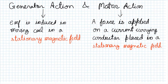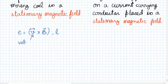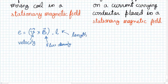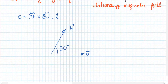We are talking about a magnetic field which is stationary and its effect on a moving conductor and a current carrying conductor. The EMF induced in a moving coil is given by V cross B dot L, where V is the velocity of the conductor, B is the magnetic field flux density, and L is the length of the conductor. If we are talking about a cross product of two vectors A and B which are perpendicular to each other, the cross product of A and B is given by this.